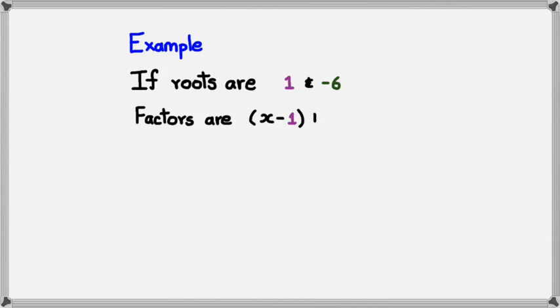Let's have a quick example. Now, we know that if roots are 1 and negative 6, then the factors are x minus 1 and x minus minus 6, which is simply just x plus 6.